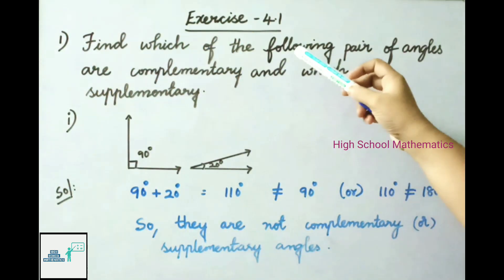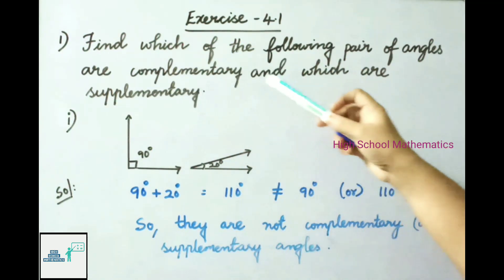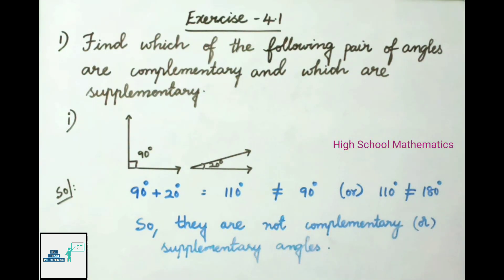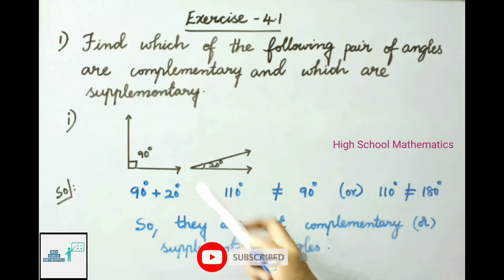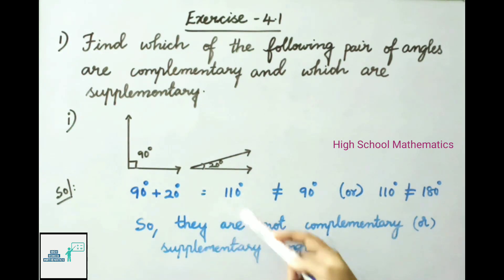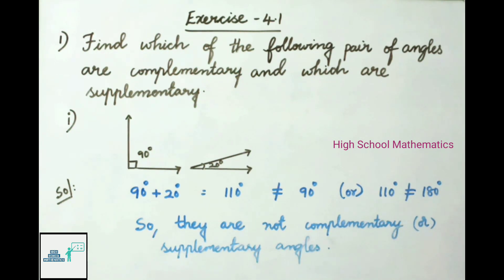See now Exercise 4.1. First, find which of the following pairs of angles are complementary and which are supplementary. We know complementary angles means the sum of two angles must be 90 degrees, and supplementary angles means the sum must be 180 degrees. First pair: 90 degrees and 20 degrees — the sum is 110 degrees, which is not equal to 90 or 180 degrees, so they are neither complementary nor supplementary.